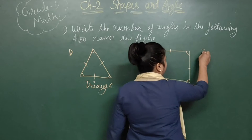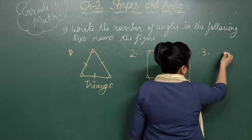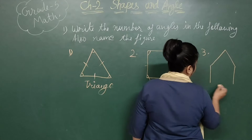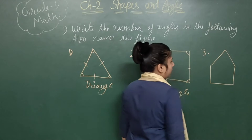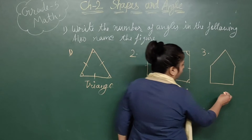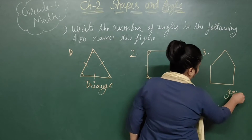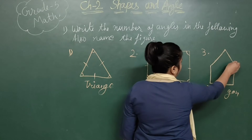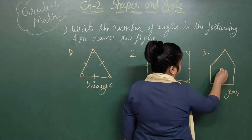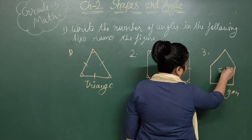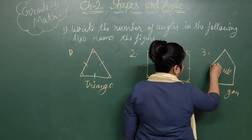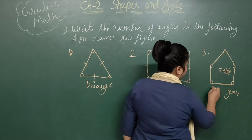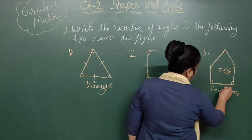Now see the third shape. This is having five sides — one, two, three, four, and five. Now, after four sides, the suffix is -gon. So a shape with five sides is called pentagon. It is having five sides and five corners — one, two, three, four, five. This shape is called pentagon.